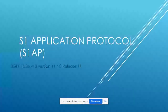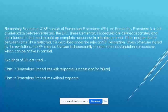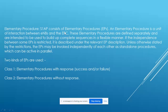The S1AP protocol is defined in 3GPP specification 36.413. In S1AP, we have elementary procedures — these procedures are the unit of interaction between the eNodeB and the EPC, which covers both the control plane and the user plane.